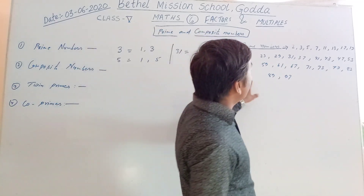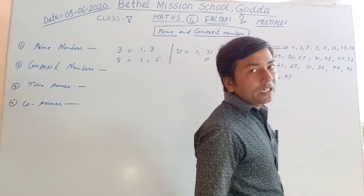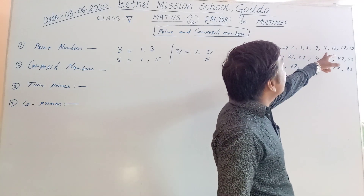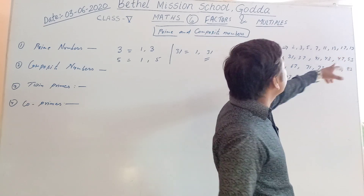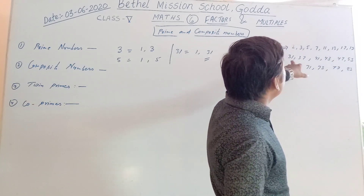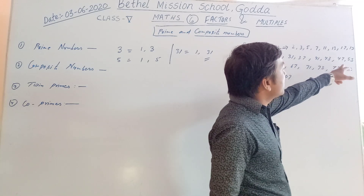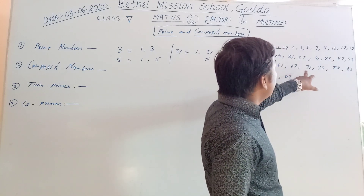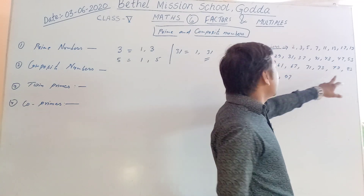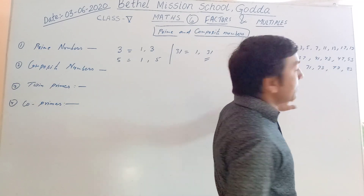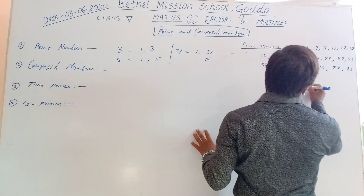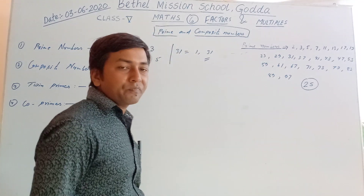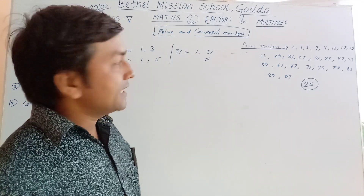I have written here Prime Numbers between 1 to 100. So: 2, 3, 5, 7, 11, 13, 17, 19, 23, 29, 31, 37, 41, 43, 47, 53, 59, 61, 67, 71, 73, 79, 83, 89, and 97. There are total 25 prime numbers. You will memorize it properly, then you can solve many questions.